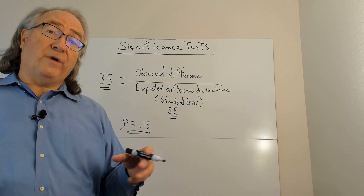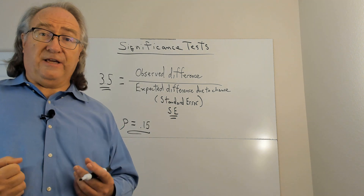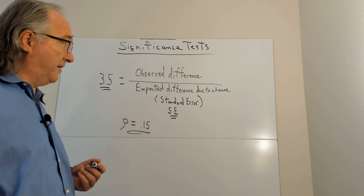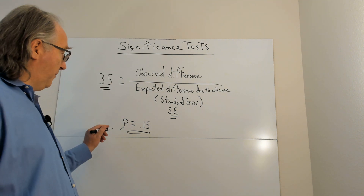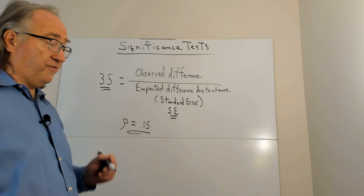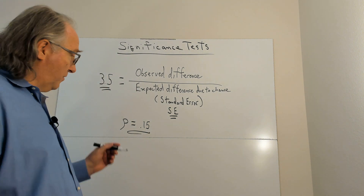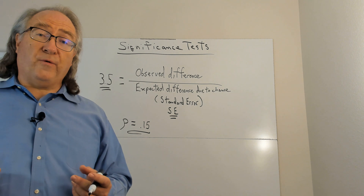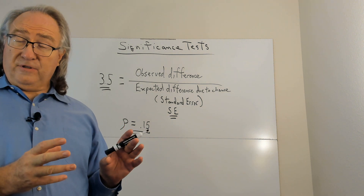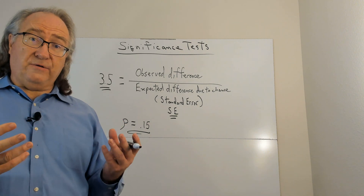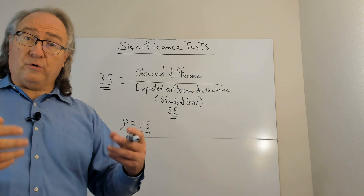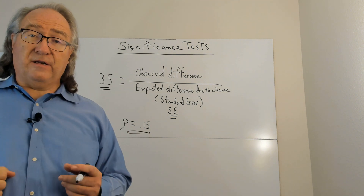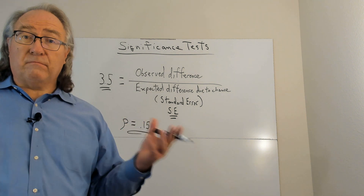In the context of regression, a significant result means the difference of the unstandardized regression coefficient value from zero is not due to chance but represents a true, real, genuine effect of the predictor variable on the outcome variable. We make the decision based on the significance test — the observed difference compared with the expected difference due to chance (the standard error) — and the accompanying p-value, to determine whether we have a significant difference or one we attribute to chance.